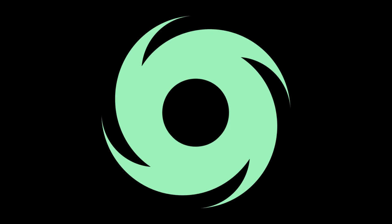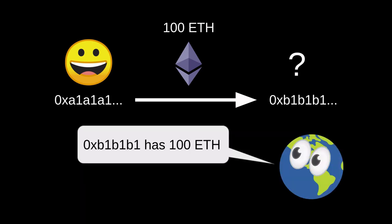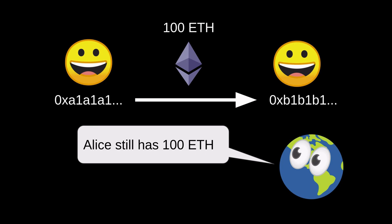In this video, I'll explain how Tornado Cash protects privacy. Suppose that Alice sends 100 Ether to another address. This transaction is recorded on the blockchain. Because data on blockchain is public data, everyone in the whole world now knows that this address, 0xb1b1b1, now has 100 Ether. Now, if people know that this 0xb1b1b1 address also belongs to Alice, then people around the world can conclude that Alice still has 100 Ether.